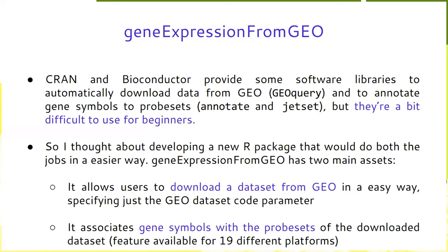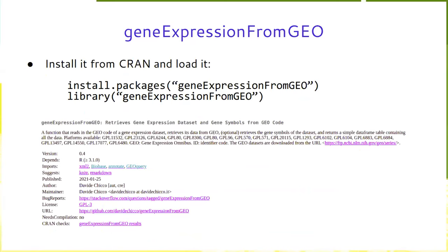A few years ago, when I was facing these problems, I decided to develop a new R package that would do both jobs in an easier way, and I called it Gene Expression from GEO. It has two main features: it allows users to download a dataset from GEO easily by just specifying the dataset code, saving the result into a data frame; and it associates gene symbols with probe sets of the downloaded dataset. This feature is available for 19 different platforms.